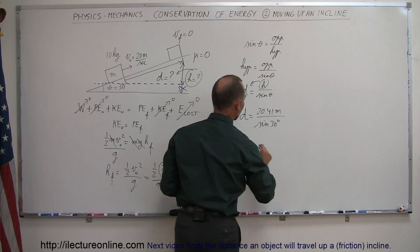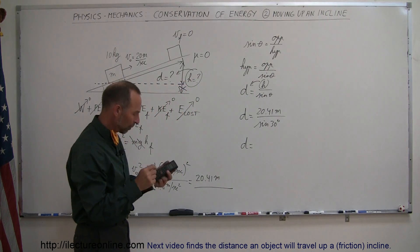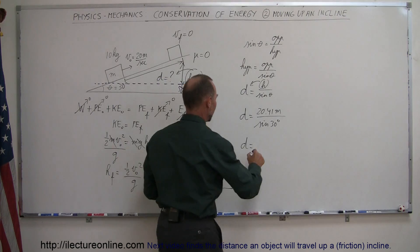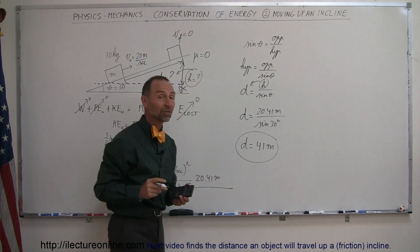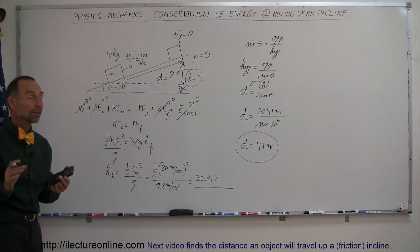And of course the sine of 30 degrees is one-half, so it's like doubling that, times two, and roughly it goes a distance of 41 meters before coming to a stop.